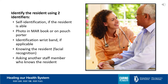As in all areas, you will need to use two identifiers when identifying your residents. This is a little bit different in long-term care. Sources you can use include self-identification if the resident is able, a photo in the MAR book or on the pouch porter, an identification wristband if applicable, knowing the resident or facial recognition, and asking another staff member who knows the resident.